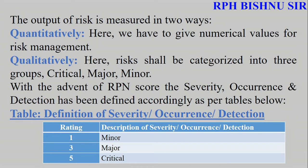The output of risk is measured in two ways: quantitatively and qualitatively. Quantitatively we give a numerical value, and qualitatively we use three groups: critical, major, and minor. In the risk management rating, minor is given a value of 1, major is 3, and critical is 5. You can use different numerical values according to your own risk management approach — this is only for quantitative analysis of QRM.